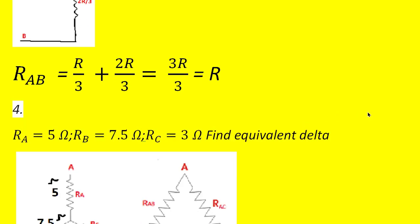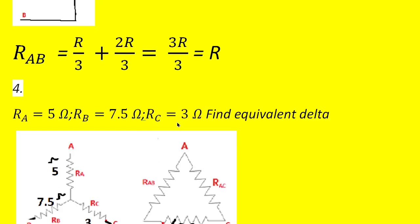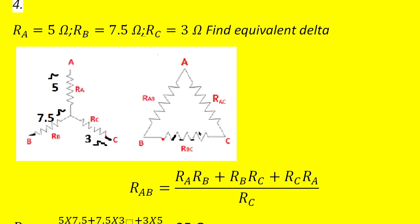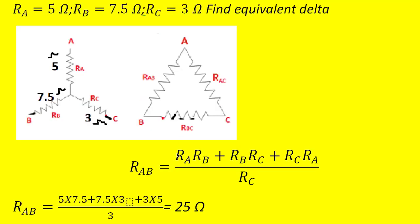Moving to the next problem: the star-connected values are given as Ra = 5 Ω, Rb = 7.5 Ω, Rc = 3 Ω. Find the equivalent delta circuit. This is a star system where the resistors are not identical — they are different.